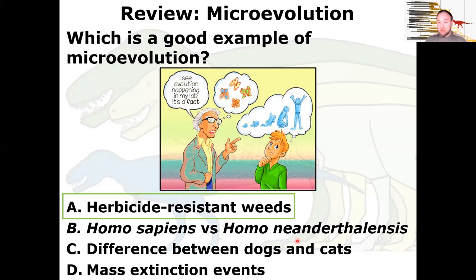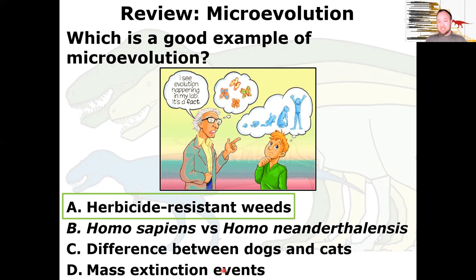Homo sapiens versus Homo neanderthalensis — that's two different species, that's macroevolution. The difference between cats and dogs is also macroevolution, but differences among dogs or among cats are microevolution since they're the same species. Mass extinction events aren't really an example of evolution at all, but they can open up new niches and lead to rapid speciation — although you could call it a macroevolutionary process.